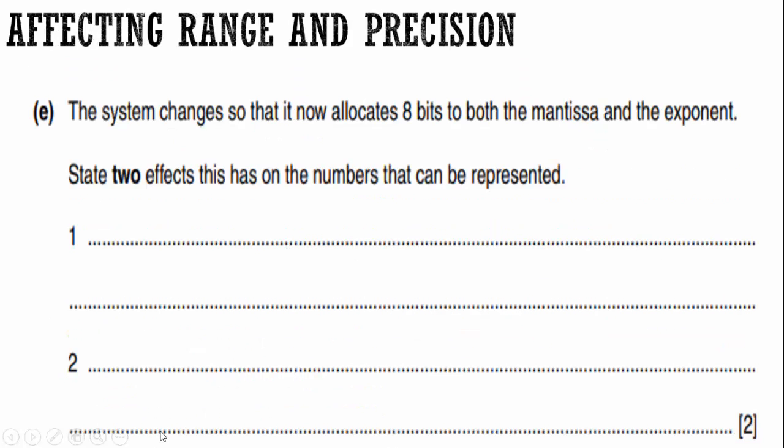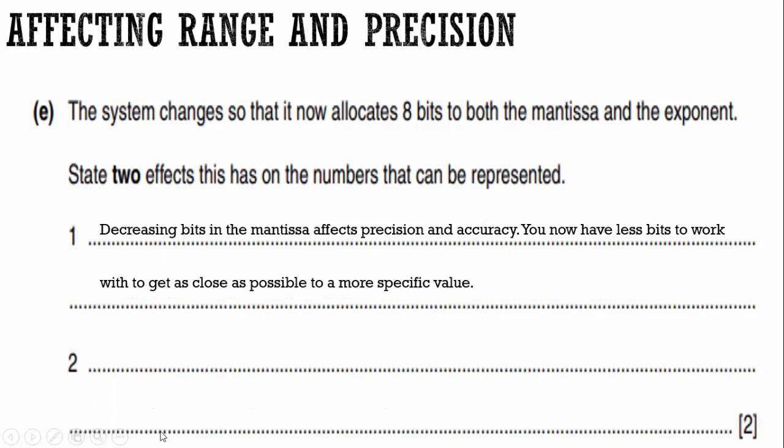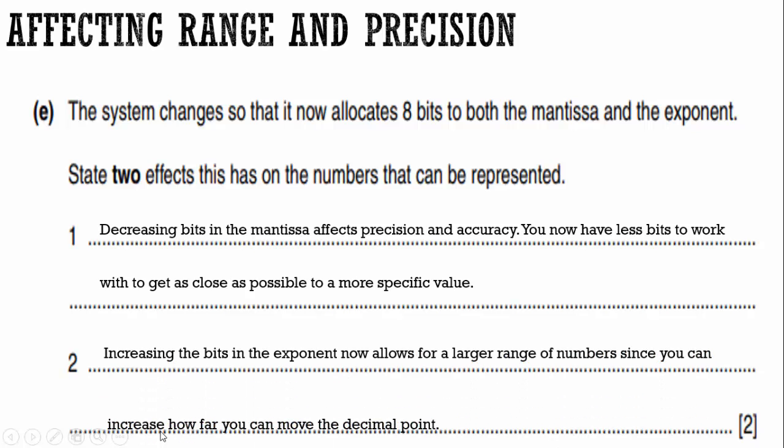Affecting range and precision is the last thing you need to know for this review. The system changes so then it now allocates eight bits to both the mantissa and the exponent. State two effects this has on the numbers that can be represented. So I now have less bits in the mantissa. I went from 12 to eight. What does that do to the accuracy of my numbers? Well, decreasing bits in the mantissa affects precision and accuracy. You now have less bits to work with to get as close as possible to a more specific value. But now I have eight bits in the exponent. I had four. Now I have eight bits in the exponent. Well, that just means I can have more room to move the decimal because I can represent a higher number in my exponent. So increasing the bits in the exponent now allows for a larger range of numbers, since you can increase how far you can move the decimal point.